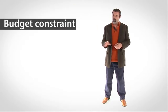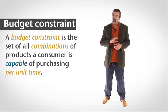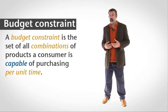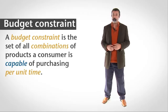Indifference curves ignore a person's limitations and describe only the person's desires. A budget constraint ignores a person's desires and only describes the person's limitations. A budget constraint traces out all the various combinations of products a consumer is capable of purchasing given his available money.